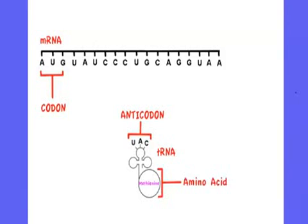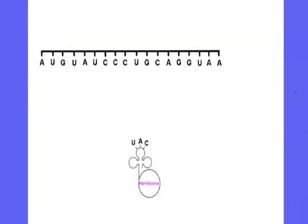Translation takes place in the cytoplasm. The first thing that happens is that the ribosome attaches to the mRNA at the start codon, which is AUG. The ribosome is made up of ribosomal RNA (rRNA) and ribosomal protein and has two sites on it: the P site and the A site.